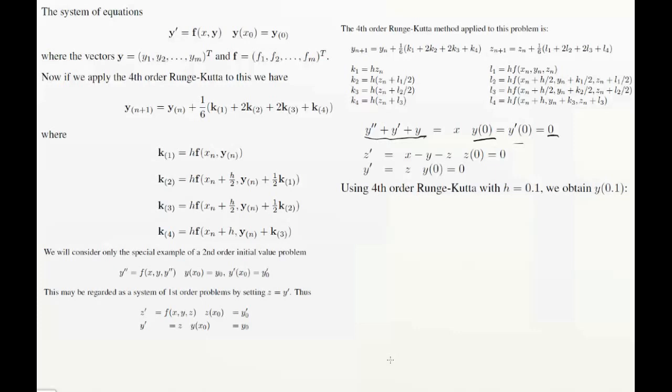Now we'll use the fourth order Runge-Kutta with h equals 0.1. And we're going to try to see how we can calculate y of 0.1, in fact. So let's actually start calculating some of the values now.